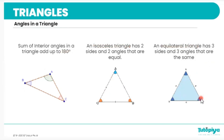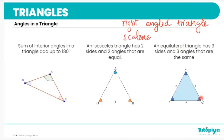We also have other types of triangles. One is a right angle triangle — as the name suggests, it has one right angle of 90 degrees. We also have scalene triangles. In a scalene triangle, all three sides have different lengths and all three angles have different magnitudes.